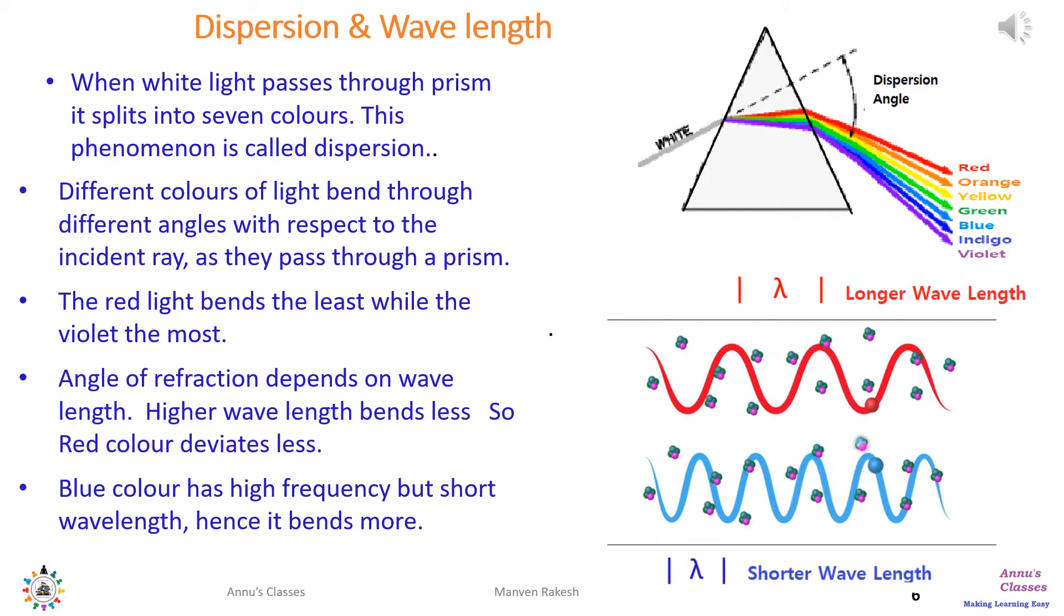Wavelength of red color is highest and that of indigo is lower. So the one which has higher wavelength and less frequency will bend less. Violet has the highest frequency and lowest wavelength, so it will bend the most.